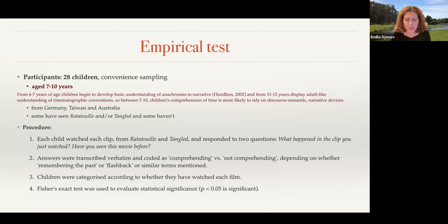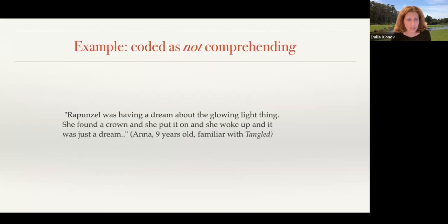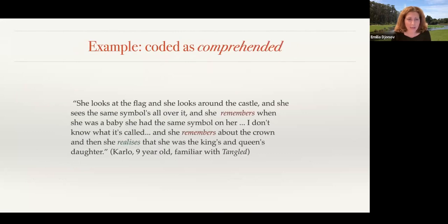For comprehending, we looked for whether the child mentioned the term flashback or said something showing they understood a character was remembering the past — words like 'remembering' would indicate comprehension. An example of a child not comprehending the flashback in Tangled was Anna, nine years old, who had watched the film before. She said: 'Rapunzel was having a dream about the glowing light thing. She found a crown and she put it on and she woke up and it was just a dream.' An example of comprehension was Carlos, nine years old, also familiar with Tangled, who said: 'She looked at the flag, looked around the castle, saw the same symbol all over it, and then she remembers when she was a baby she had the same symbol on her, and she remembers the crown and realizes she was the king's and queen's daughter.'